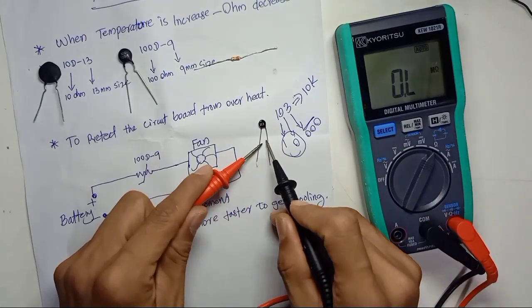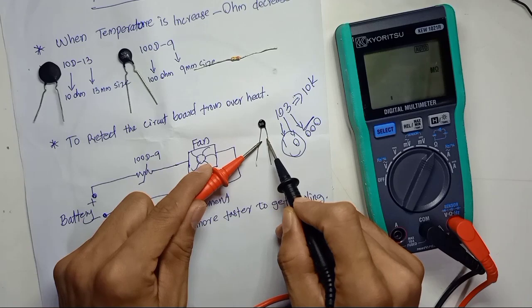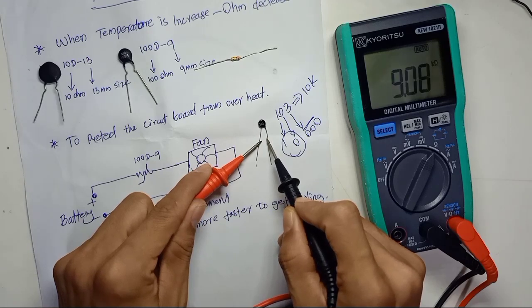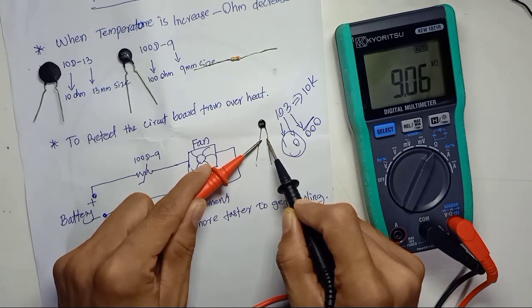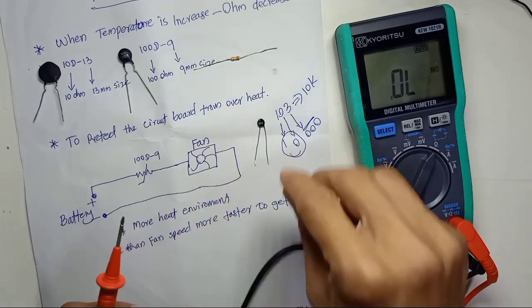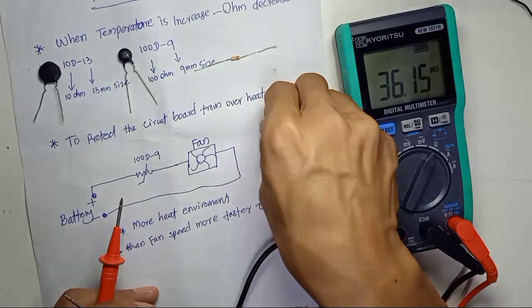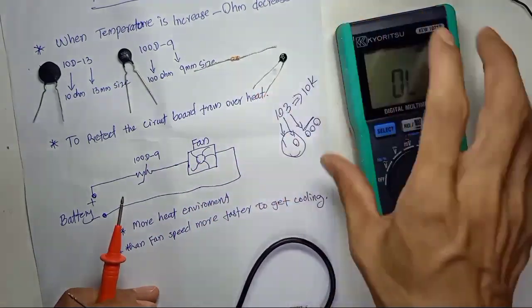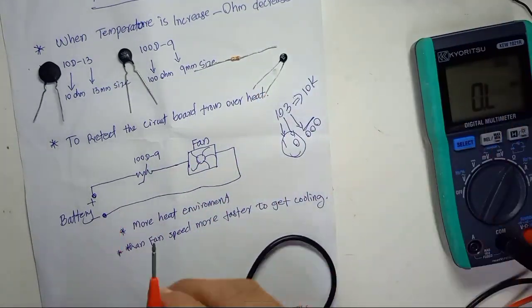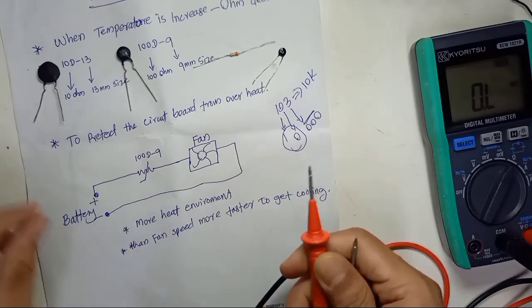Let's measure the 103 thermistor. We get 9.08 kilo-ohms, which is within the plus-or-minus tolerance of the rated 10K.